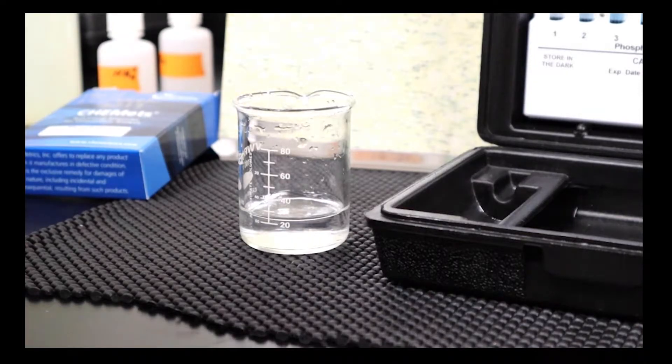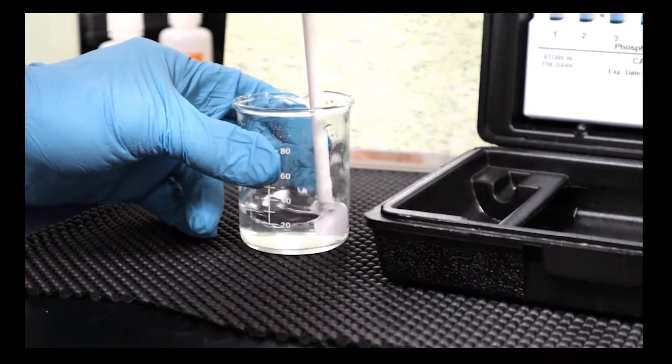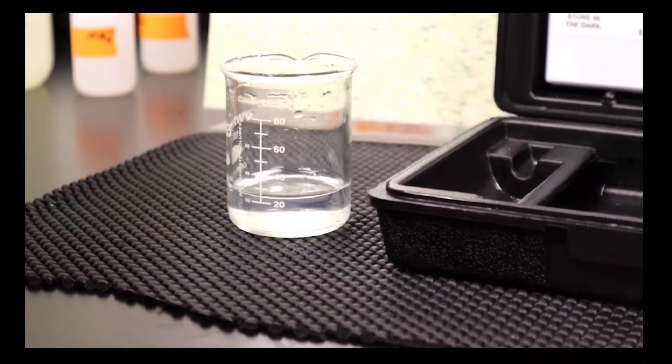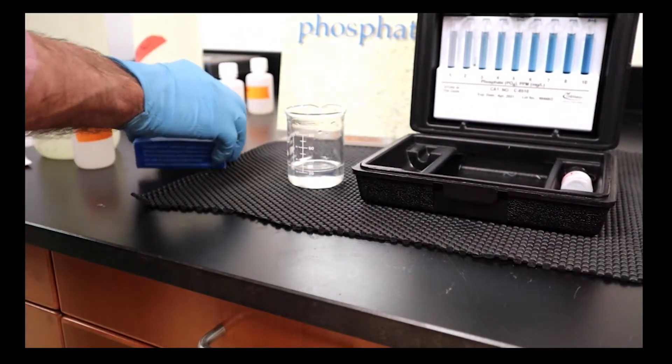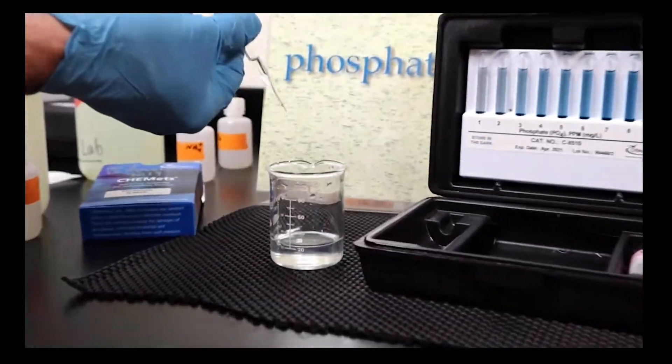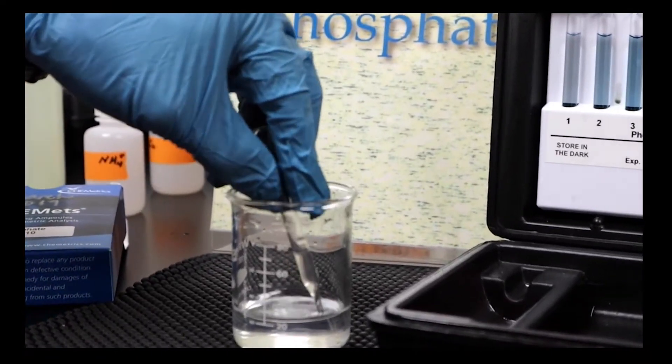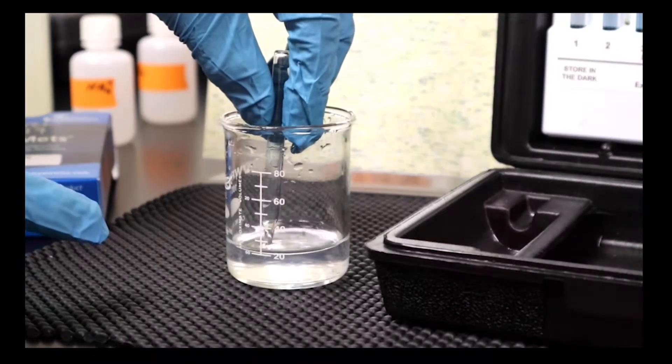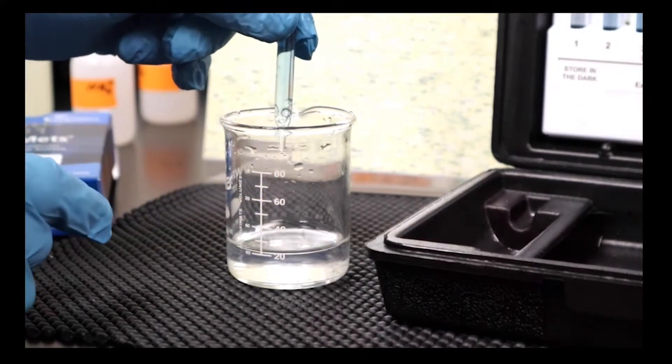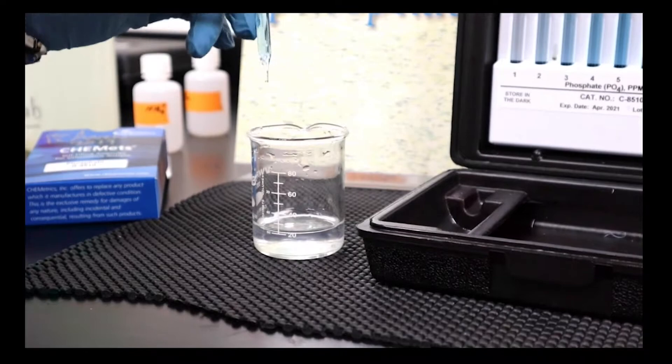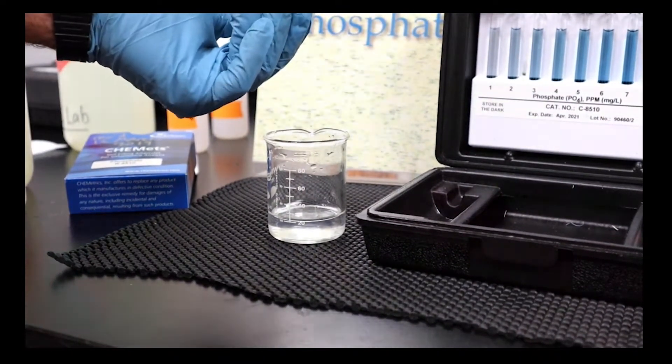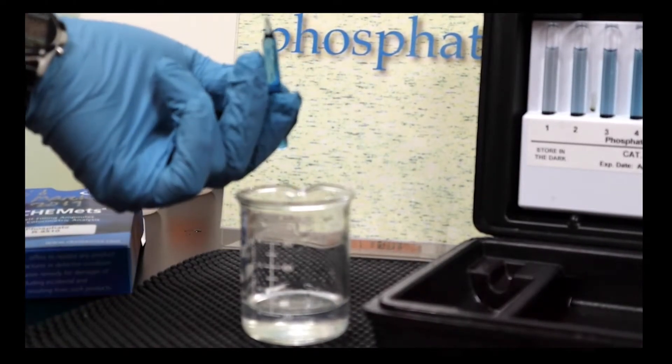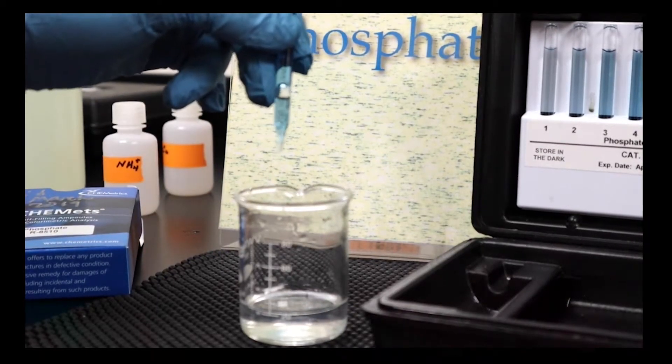There are two drops and we'll stir—good mixing is always important in these analyses. We'll take another vial with reagent two. Again you can see that there's a little bit of reagent in there and a lot of space to draw water up. We break the vial by pressing it into the bottom of the beaker and then let it suck up in there. You can see it looks very much like last time, and we'll keep track of the time. You can see the color starting to develop.